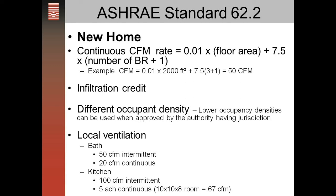For a kitchen fan, the requirement is 100 CFM intermittent or five air changes per hour continuous. For example, a 10 by 10 by 8 foot kitchen would be 67 CFM continuous.